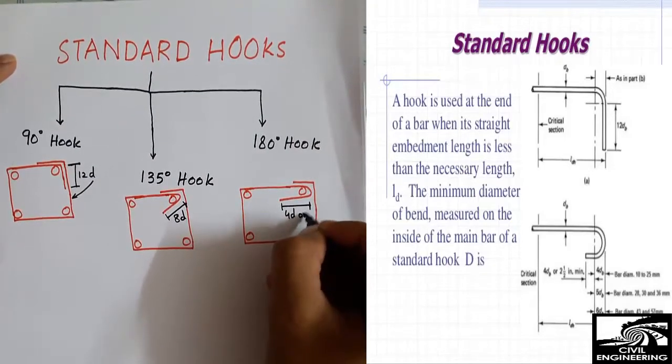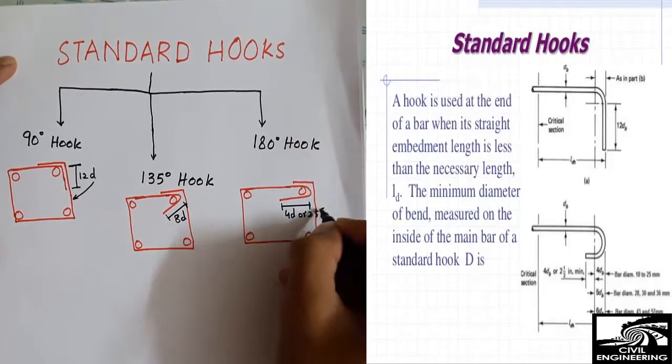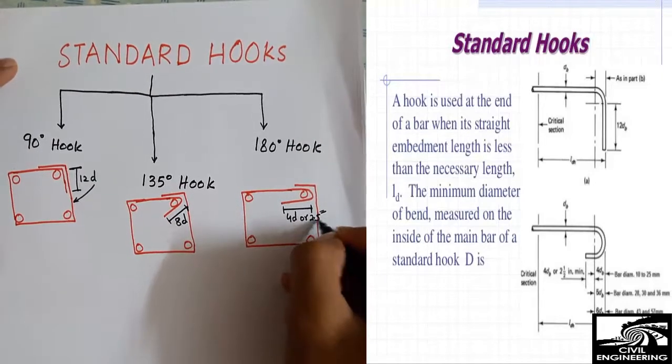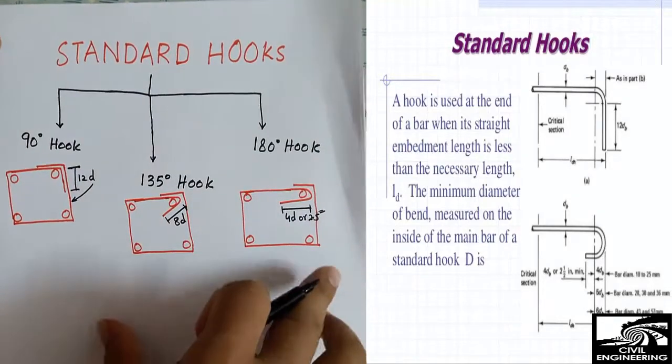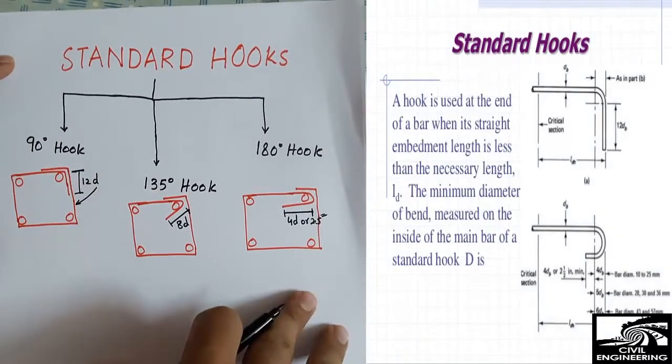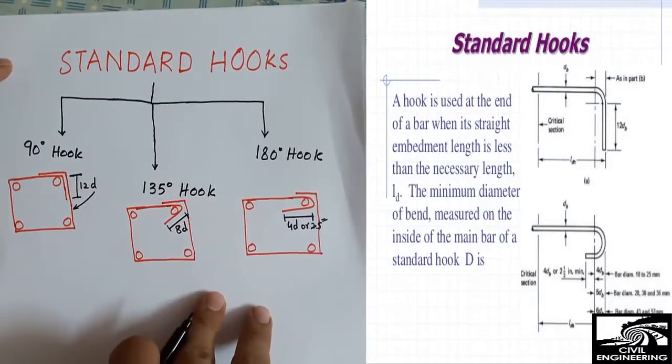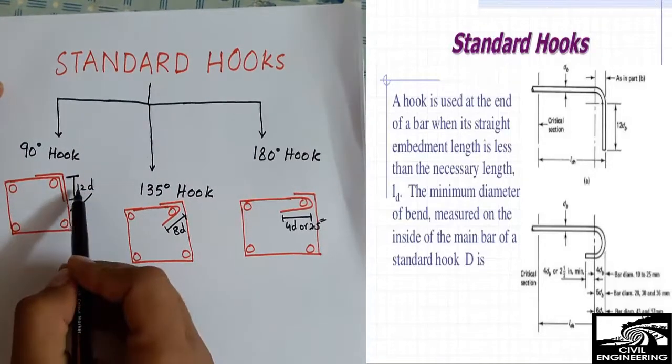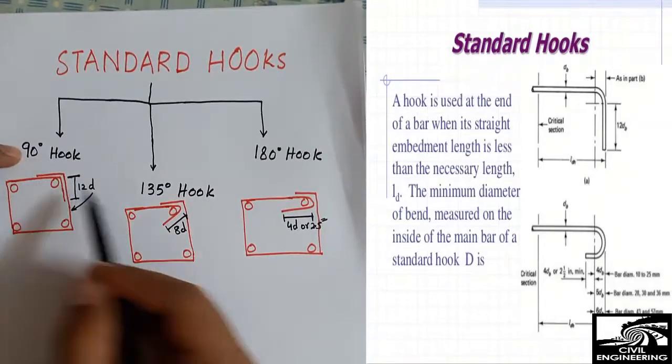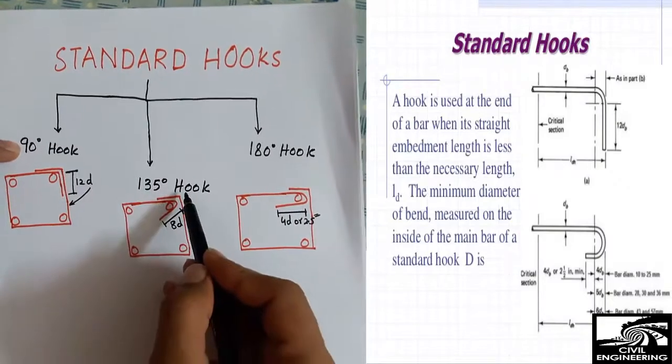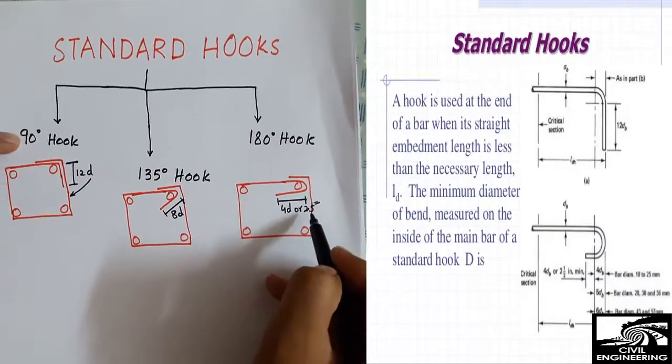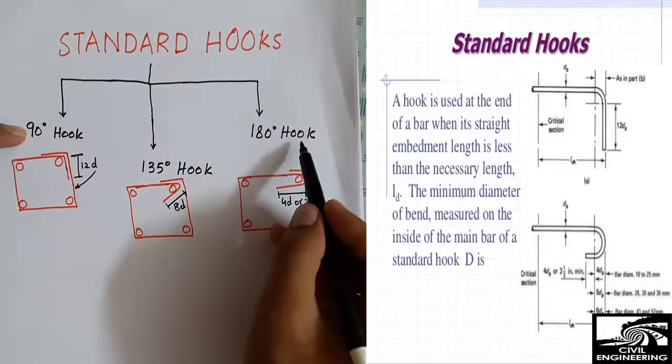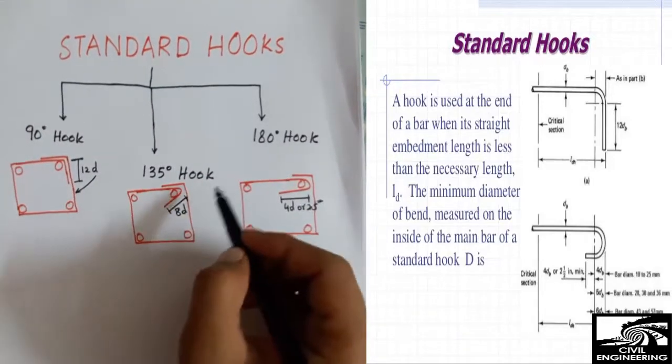So these are the three standard hooks which we normally use in our construction projects, and these lengths should be provided: 12d for 90 degree hook, 8d for 135 degree hook, and 4d or 2.5 inches for 180 degree hook. These are the ACI standards and should be provided as per ACI recommends.